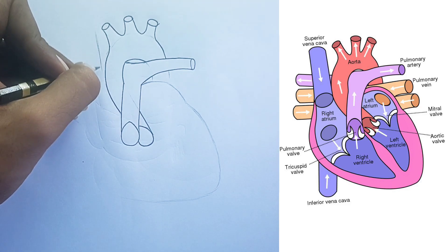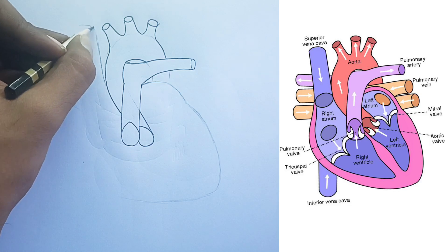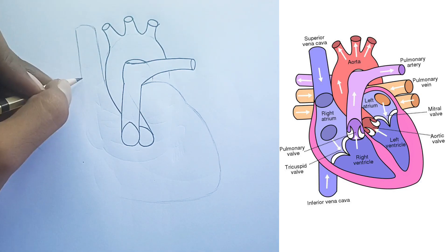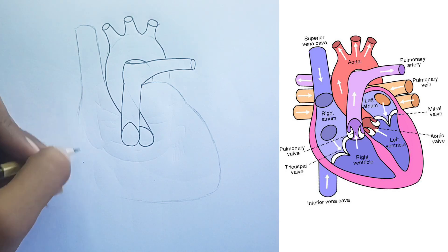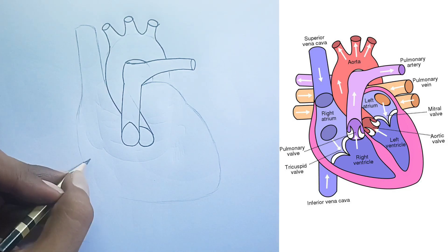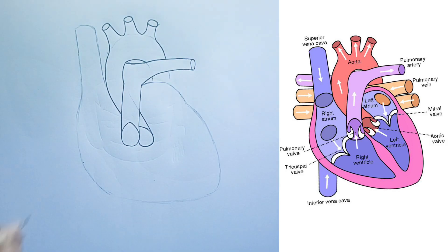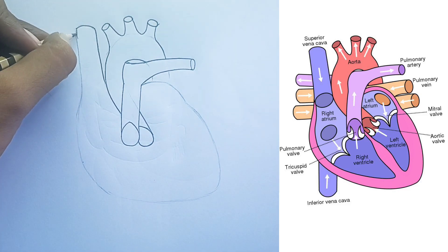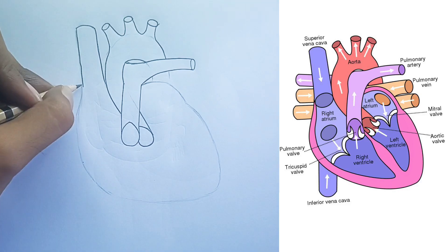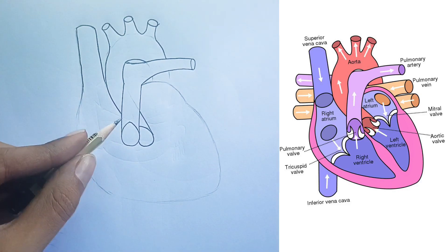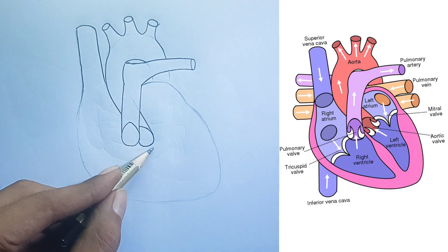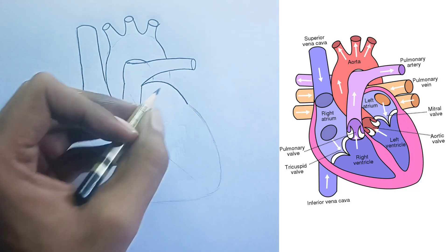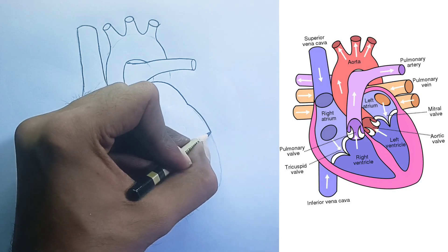Valves of the heart: these valves ensure unidirectional blood flow, preventing backflow. Tricuspid valve: located between the right atrium and the right ventricle. It opens to allow blood to flow from the right atrium into the right ventricle, and closes to prevent backflow during ventricular contraction. Pulmonary valve: located at the exit of the right ventricle, leading into the pulmonary artery.